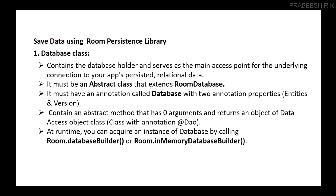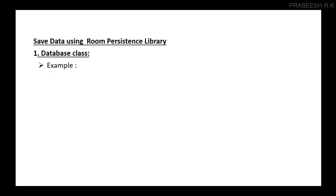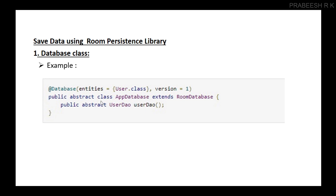The Database class must contain an abstract method that has zero arguments and returns an object of the Data Access Object class. A Data Access Object class is a class with the annotation @Dao. At runtime, you can acquire an instance of the database by calling Room.databaseBuilder() or Room.inMemoryDatabaseBuilder(). Here is a simple example of the Database class — it is always annotated with @Database and that annotation must have two properties: entities and version. Here, User.class is a table in your database, version is your database version, and the class contains an abstract method that returns an object of the Data Access Object — here UserDao is the Data Access Object class.